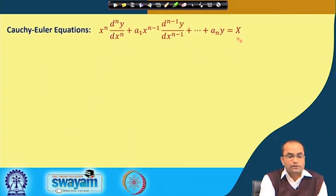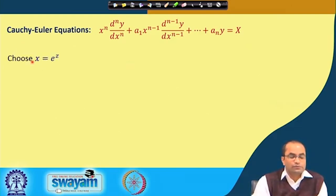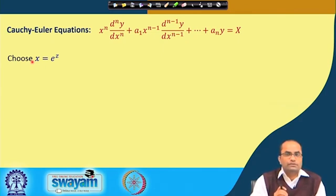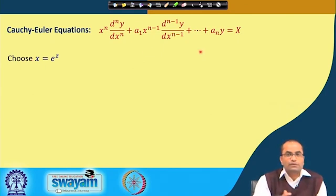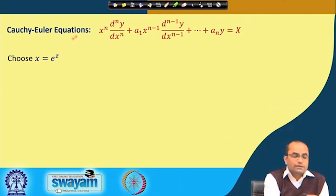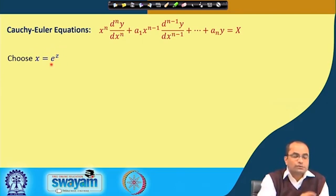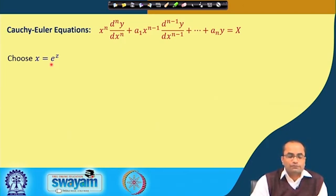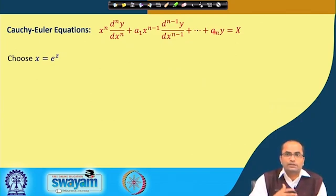Now for this Cauchy-Euler equation, how do we solve it? We will substitute x = e^z. So the independent variable x in the given equation will be replaced by the independent variable z through the relation x = e^z. That is the trick, and what this trick will do is convert the given differential equation into a linear equation with constant coefficients. That is the idea behind this substitution.